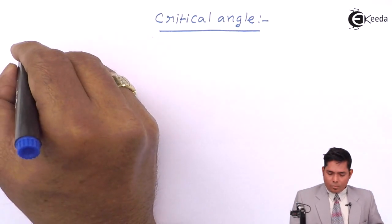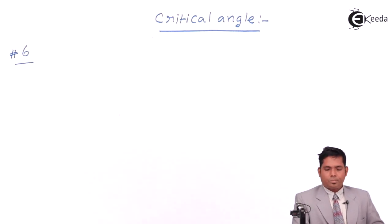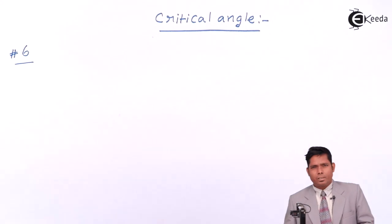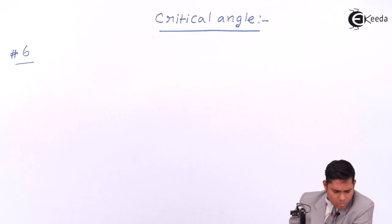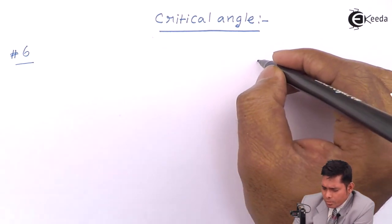Critical angle. What is that angle? The angle of incidence in the denser medium for which the angle of refraction is 90 degrees. The question is, let us discuss the theory first.